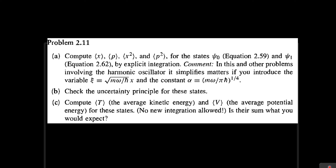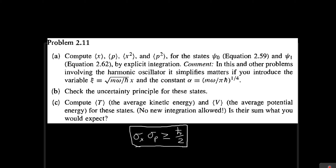Now we're going to solve part b. We're going to check the uncertainty principle is satisfied for the two stationary states here. The uncertainty principle tells us that the standard deviation for position x multiplied by the standard deviation of momentum p must always be larger than or equal to h-bar over 2. We're going to prove this is always true for the two stationary states, ξ₀ and ξ₁.